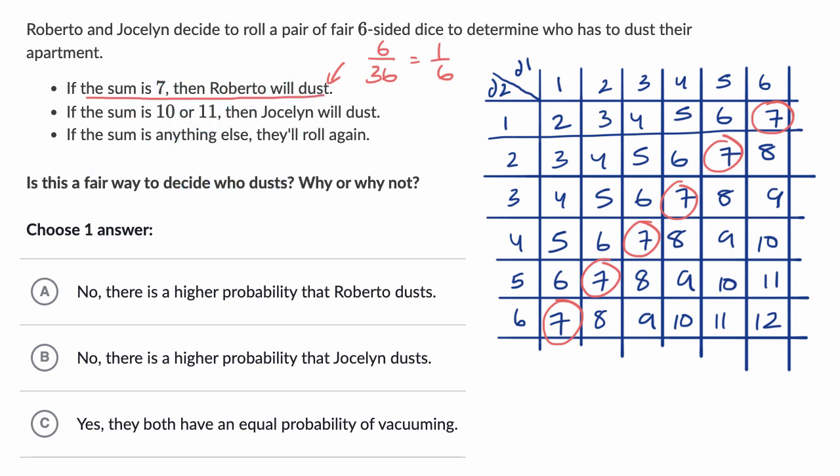And then let's think about the tens or elevens. If the sum is 10 or 11, then Jocelyn will dust. So 10 or 11, so we have one, two, three, four, five.